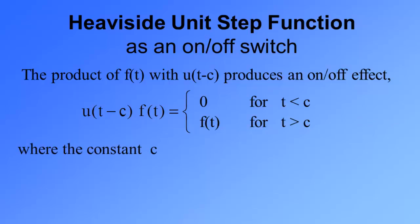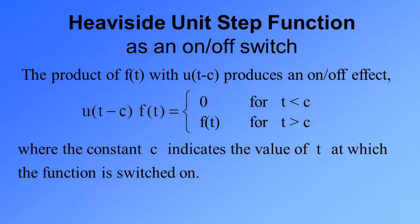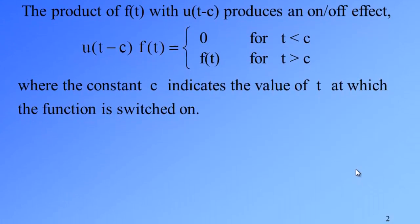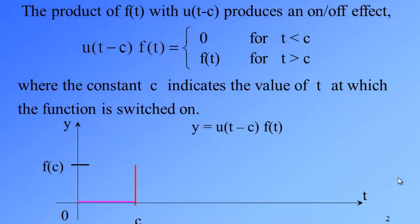Where c is a constant that indicates the value of t at which the function is switched on. In terms of graph, you will find that the function value is 0 before t equals c, and at t equals c it shows up to f(c) and then continues the value of f(t). This gives you the function y equals u(t-c) times f(t).